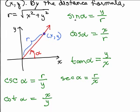What I want you to notice, if you look at the sine of alpha and the cosecant of alpha, they're reciprocals. Notice the sine of alpha is y over r, but the cosecant is r over y. So these are called reciprocal functions. Cosine of alpha is x over r, and the secant of alpha is r over x, so these two, cosine and secant, are called reciprocal functions. And the tangent of alpha is y over x, the cotangent is x over y.